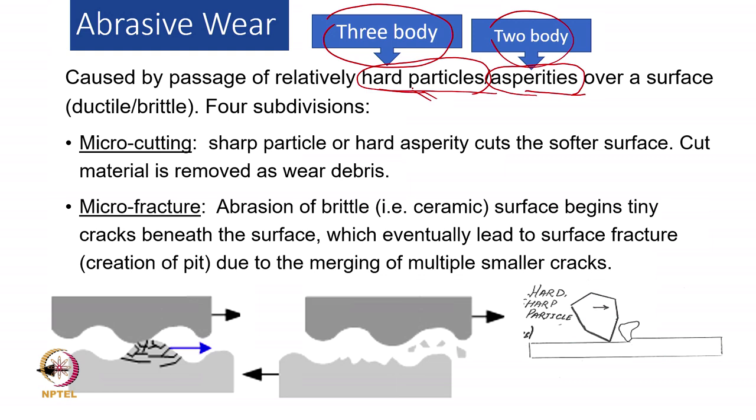These are the 2 parts, but it also depends on whether the metal subjected to abrasion is a ductile or brittle material. Depending on whether the material is brittle or ductile and the kind of particle shape, we can divide abrasive wear itself into 4 subdivisions.